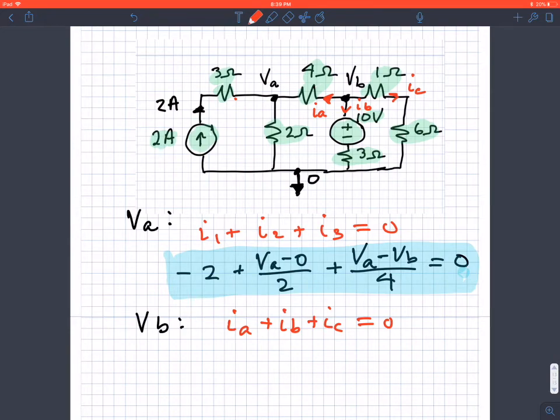Now it's just a matter of finding what those currents would be. If I reference the current IA in this direction, I'm assuming the plus is here and the minus is here. To get IA, it's VB minus VA divided by four.